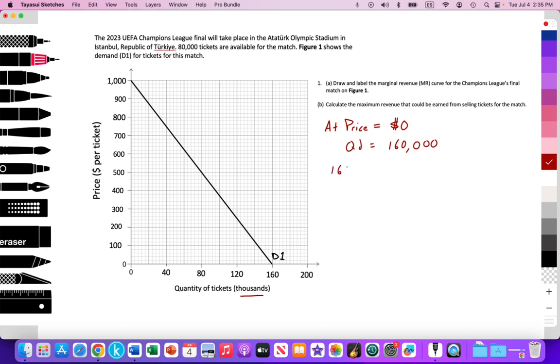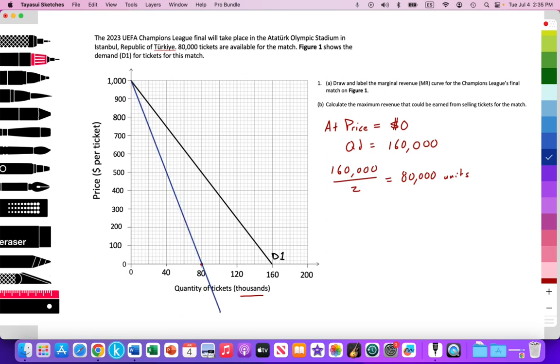Well, let's take 160,000, divide that by two. And halfway across that demand curve is at 80,000 units or tickets. So, we're going to mark that point here. And that's where the marginal revenue curve should hit zero. So, I'm going to go ahead and illustrate that. So, marginal revenue will be hitting zero at 80,000 tickets at that point.